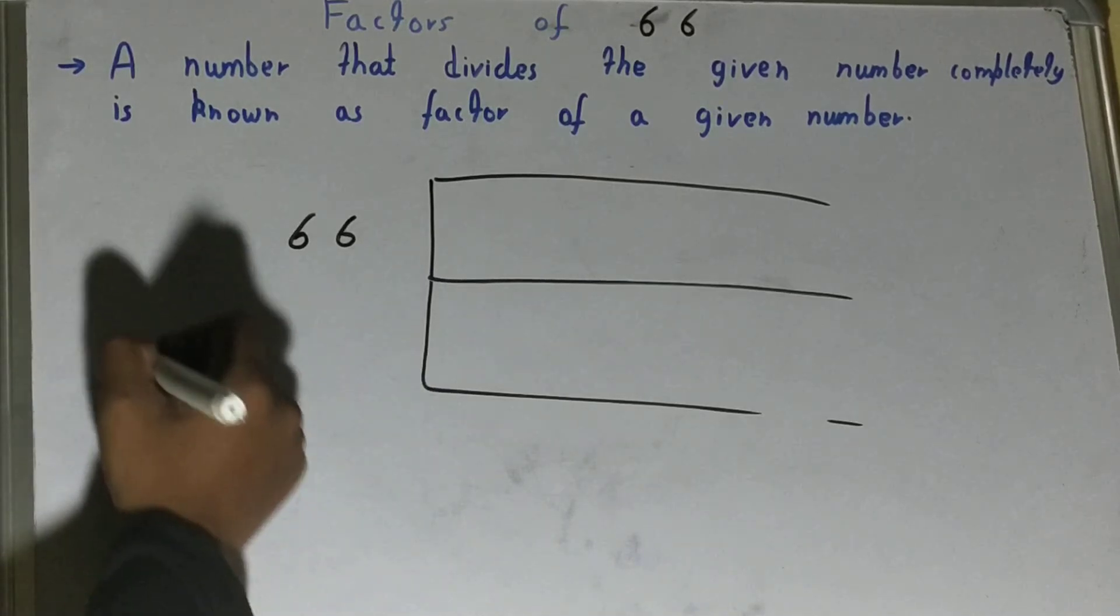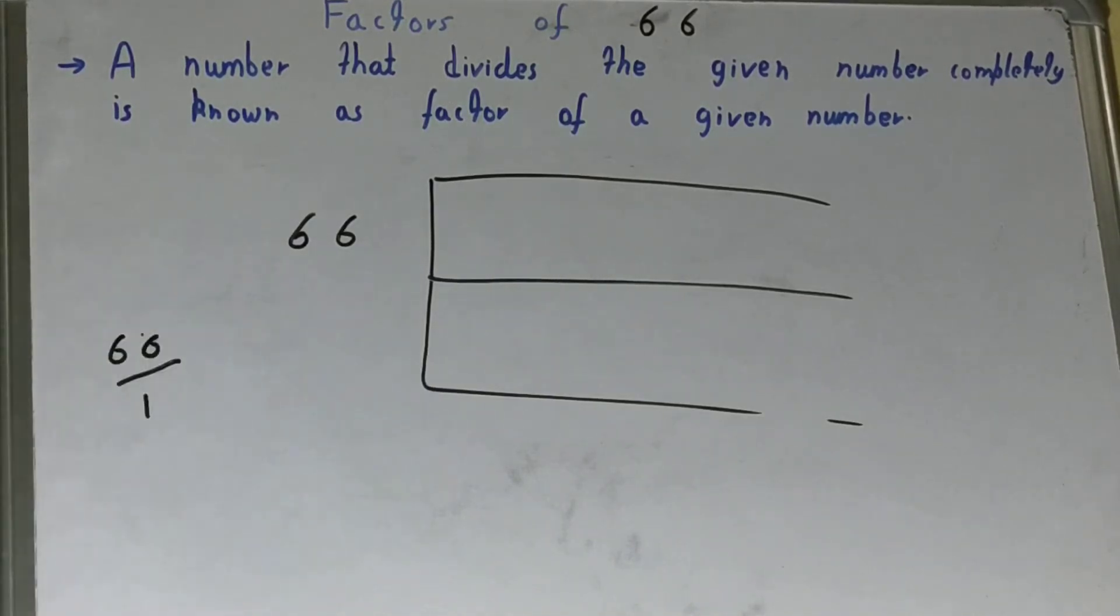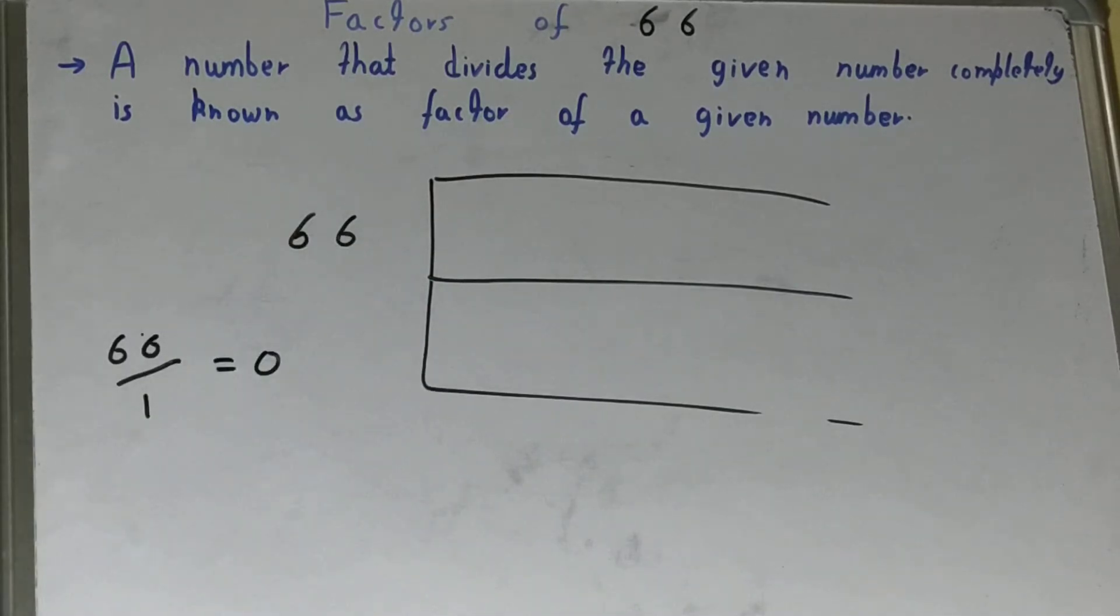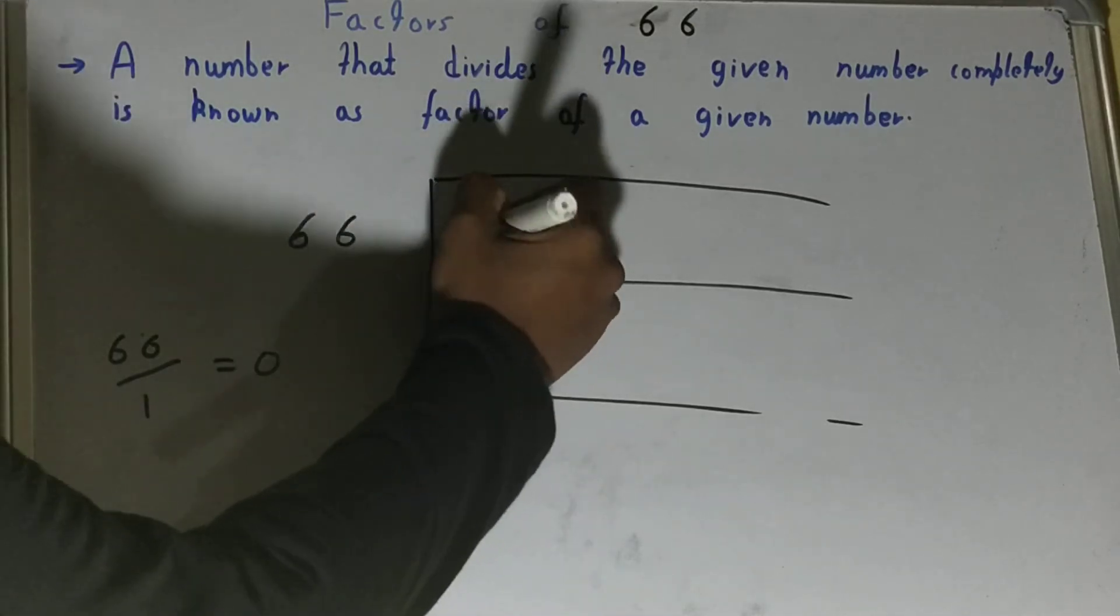How do we check? We'll divide 66 by 1. Will we get the remainder zero? Yes. If we divide 66 by 1, we'll get the remainder zero, so 1 is a factor.